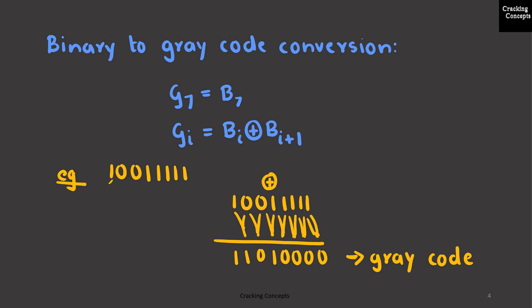For example, this is an 8-bit binary number. What we do is we will retain the MSB as such, which is 1. Then we will perform an XOR between each of the successive bits: 1 0 1 1 0 0 0 0, and so on. So this is the final Gray code.